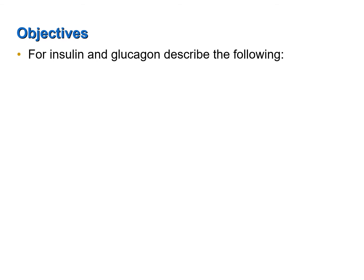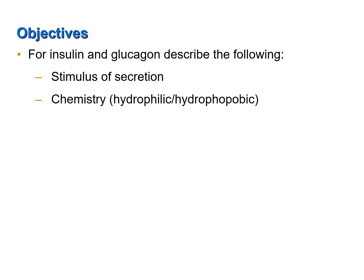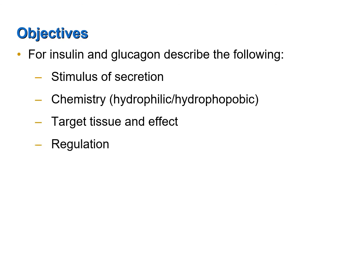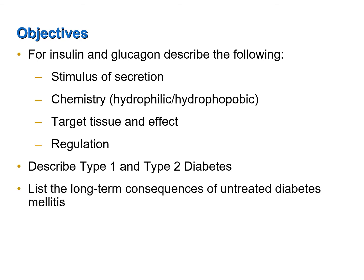Let's review the objectives of this screencast. For insulin and glucagon, describe the stimulus of secretion, chemistry (whether hydrophilic or hydrophobic), target tissue and effect, and regulation. Also describe type 1 and type 2 diabetes, and list the long-term consequences of untreated diabetes mellitus.